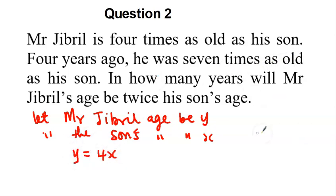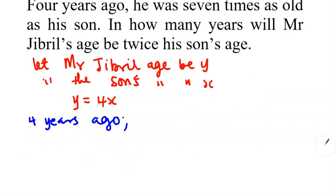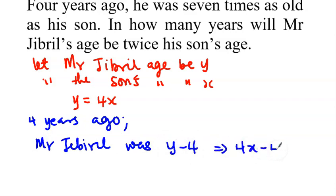The question said four years ago. So four years ago let's find out their ages. Mr. Jabril was y minus four which implies that four x minus four, and the son was x minus four.